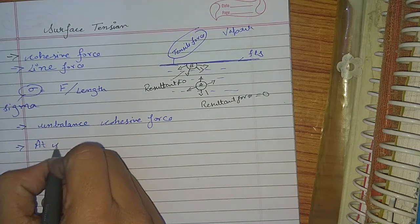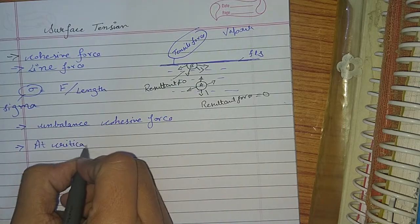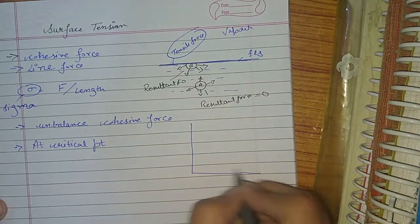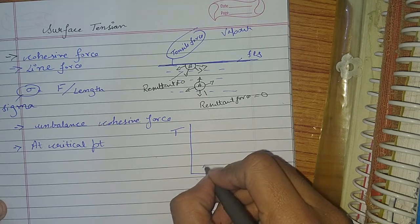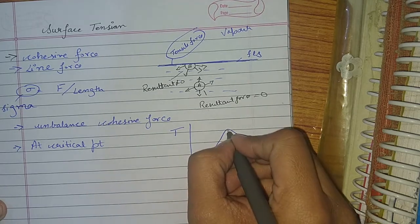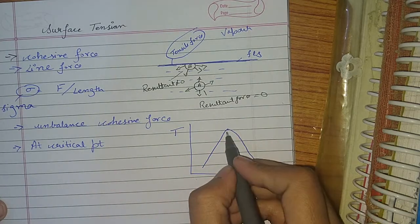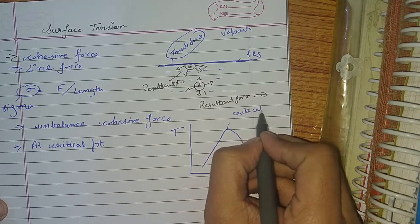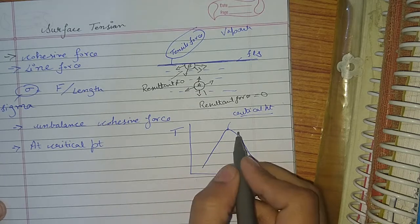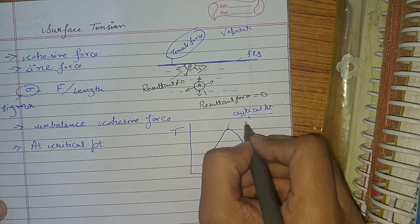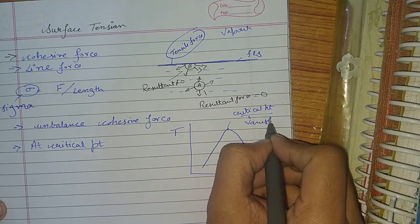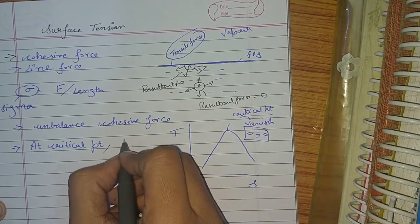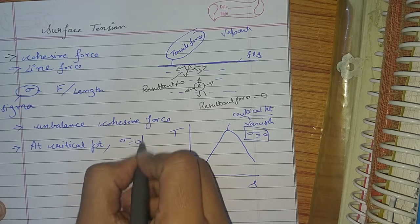At the critical point — suppose this is a T-S diagram and this is our critical point — there is no liquid-vapor interface. So our sigma will be equal to zero. At the critical point, surface tension will be equal to zero.